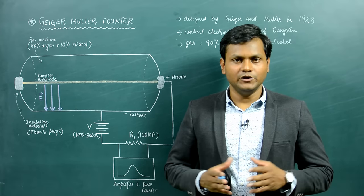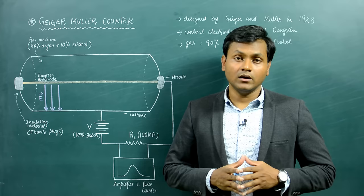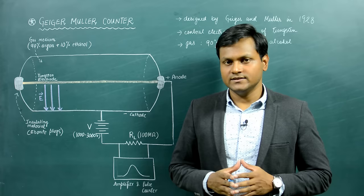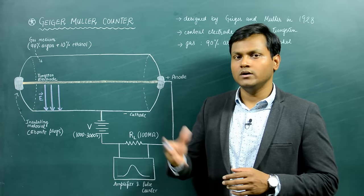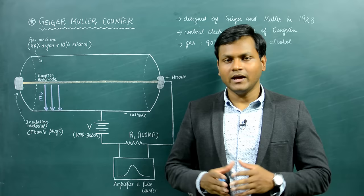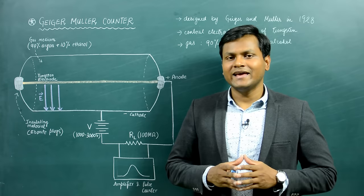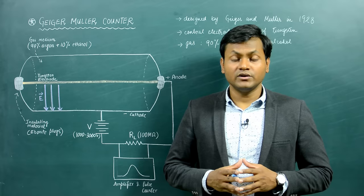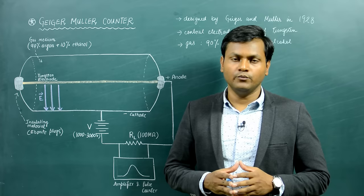Hi everyone, welcome to my video. If you have been following my previous videos, you would know that I am doing a course on nuclear physics. And as part of nuclear physics, I am also discussing nuclear detectors. One of the very important nuclear detectors is a GM counter or a Geiger-Müller counter. I have made a video on it previously and I'm very happy with the positive response it got. But I'm doing this video again as part of this particular course, covering everything related to GM counters including topics I missed out in my earlier video. So let's begin.